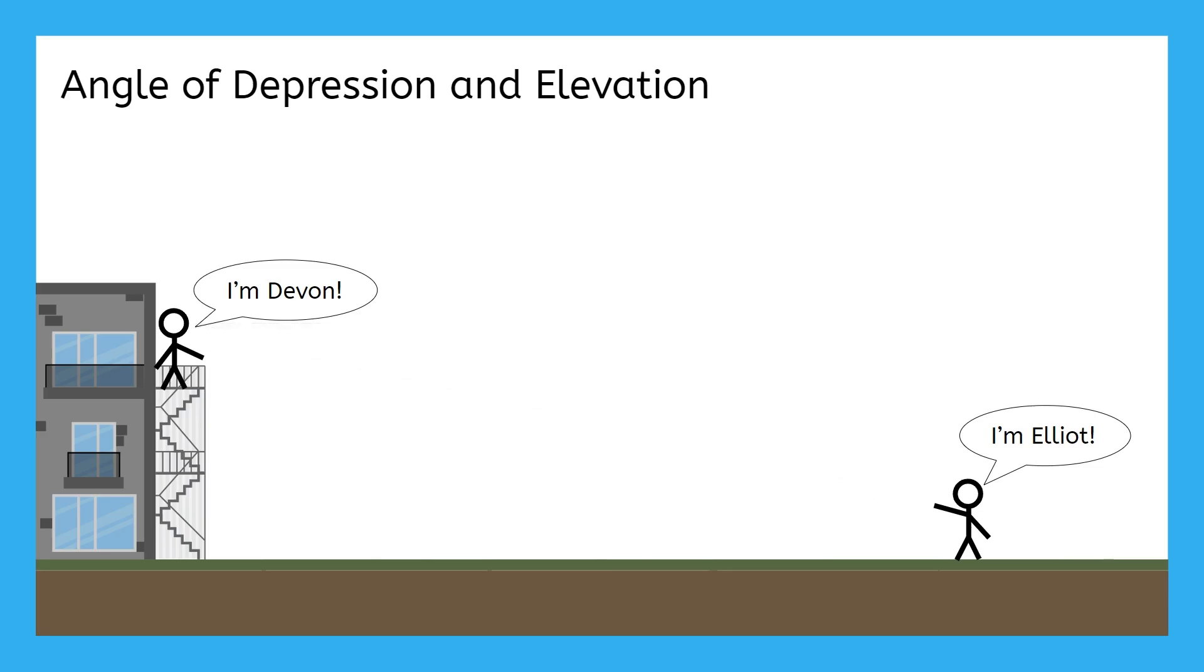Now let's talk a little more about Elliot. If Elliot were looking straight out in front of him, he would be looking at the side of the building. But instead, he's looking up at Devin.